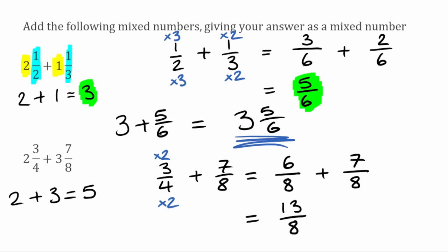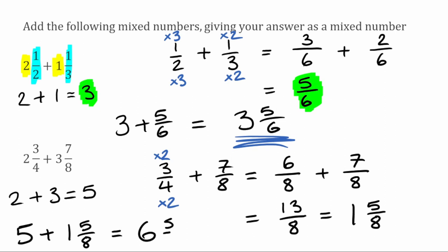But now we've got an improper fraction, so we want to change it back into a mixed number. Eight will go into thirteen once and leave us with a remainder of five, so the proper fraction part would be five eighths. So thirteen over eight is the same as one and five eighths. Now I'm going to add the two parts together: the five from earlier, add one and five eighths. Five add one is six, and then we've got the remaining five eighths. So our final answer is six and five eighths.